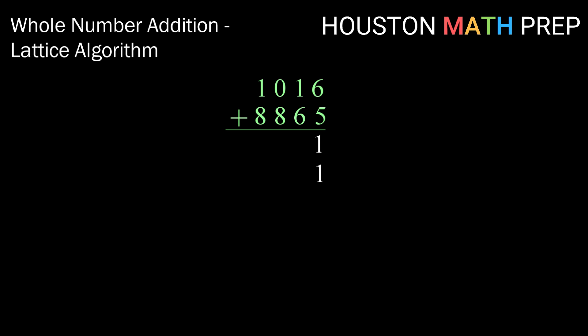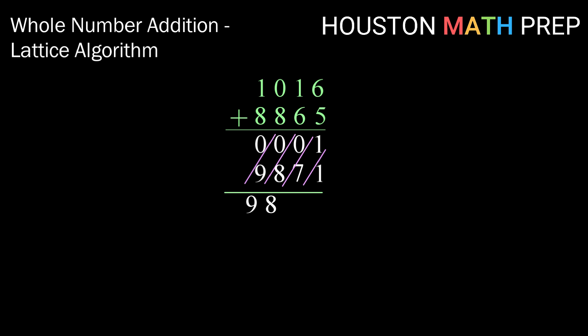Let's start on the right here. 6 plus 5 is 11, so writing that vertically, 1 and 1. In the next column, 1 plus 6 is 7, so we're going to write that as 0, 7. Then 0 plus 8 is 8, or 0, 8. And in our last column, 1 plus 8 is 9, or 0, 9. Drawing in our diagonals — so now we write down the sum of each diagonal. That top one is just 0, so we don't need that leading 0. Going to the next diagonal, 0 plus 9 is 9. Then 0 plus 8 is 8. Then 1 plus 7 is 8, and that last diagonal has only a 1 in it. So our sum here is 9,881.